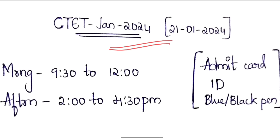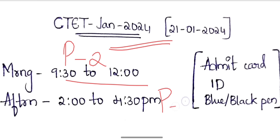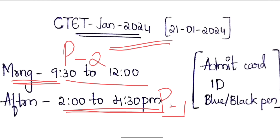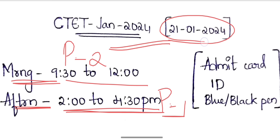So if you are confused: Paper 2 is in the morning session, and Paper 1 is in the afternoon session. This is different from last time, when Paper 1 was in the morning shift and Paper 2 was in the afternoon shift. This time, Paper 2 is in the morning shift and Paper 1 is in the afternoon shift.